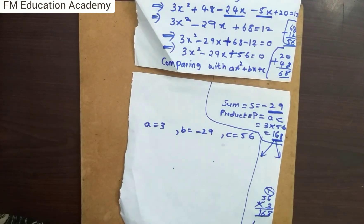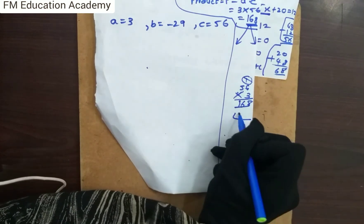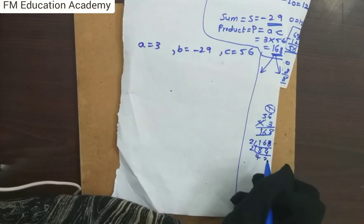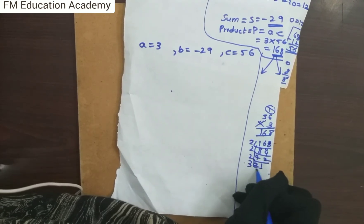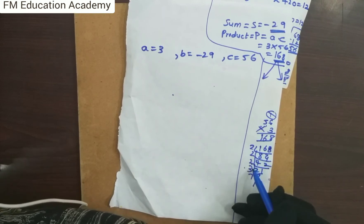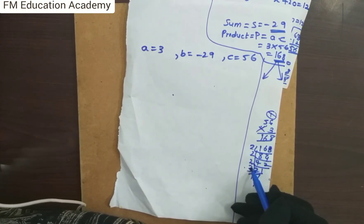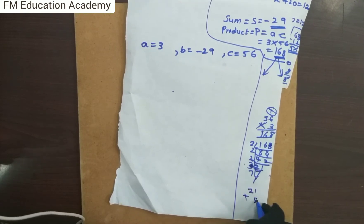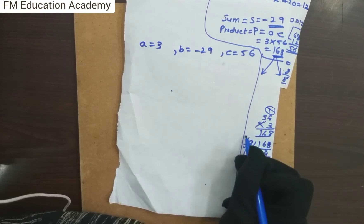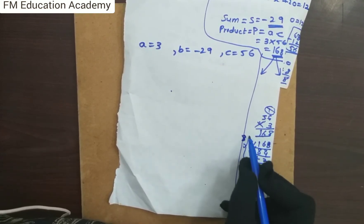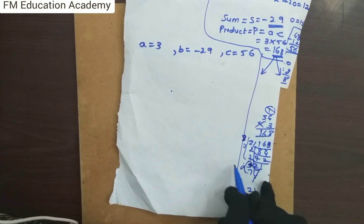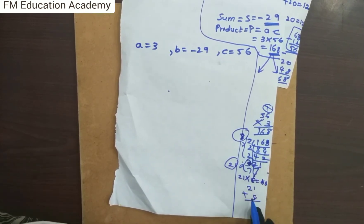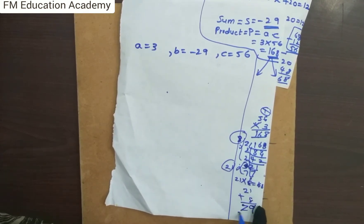Taking the prime factorization of 168: 168 = 2 × 2 × 2 × 3 × 7. Now I need two factors of 168 that sum to 29. Trying 21 and 8: 21 × 8 = 168 and 21 + 8 = 29. So the factors are 21 and 8.